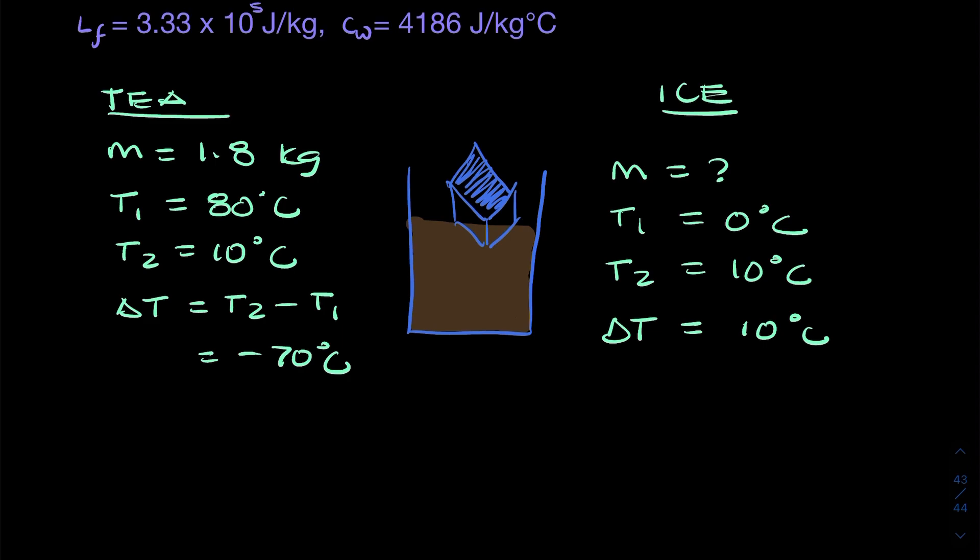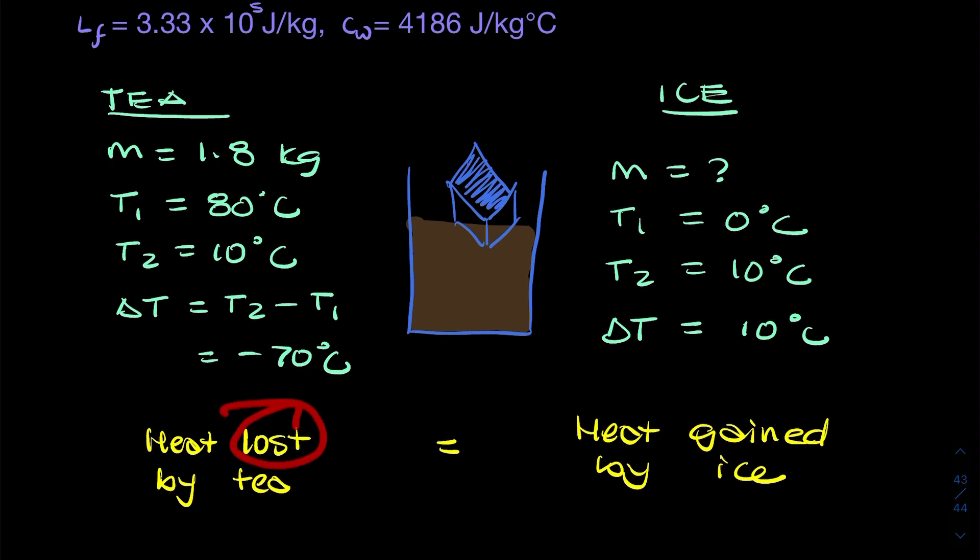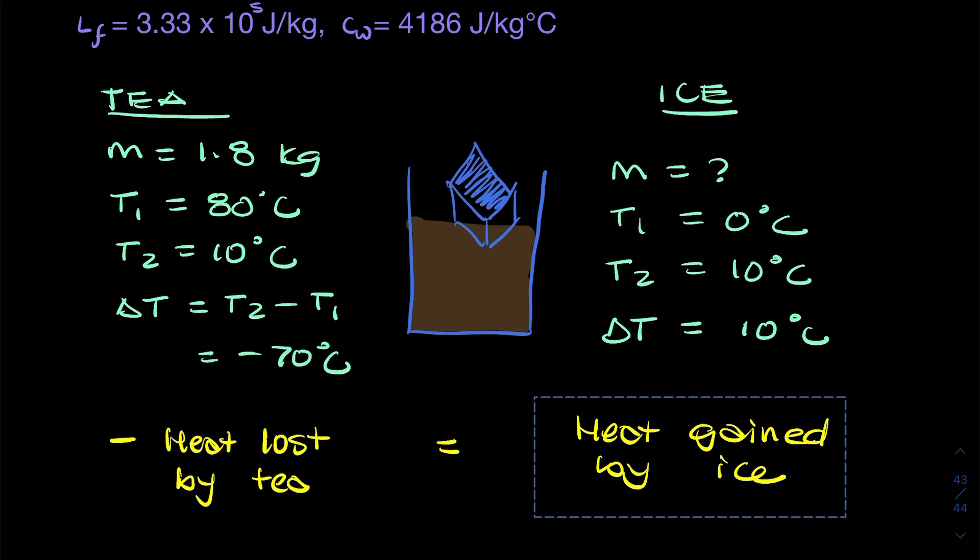We need to decide which of these materials loses heat and which gains heat. Obviously the tea is hot, so it will lose heat. So we can say the heat lost by the tea is equal to the heat gained by the ice. Now because one is lost and one is gained, we need a minus sign. We can put the minus sign on this side or on that side, it doesn't matter, but we need a minus sign on one side because we've got heat gain and heat loss.